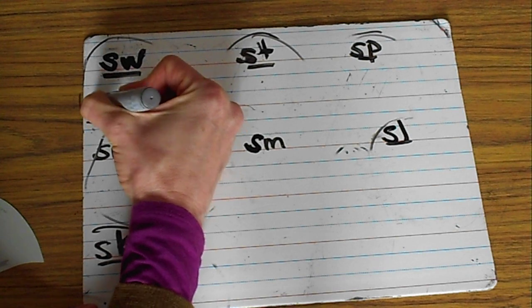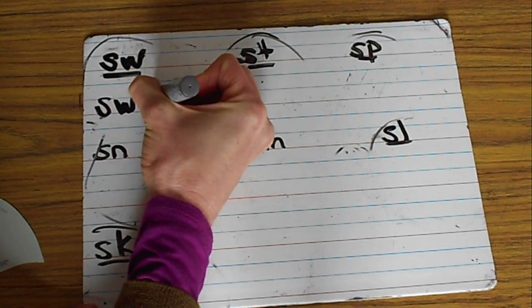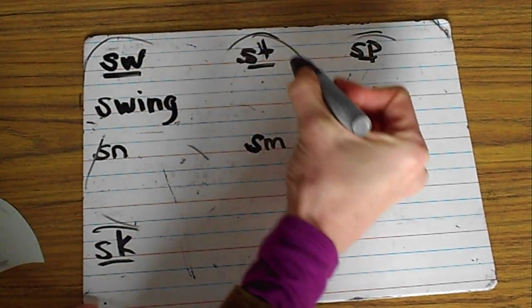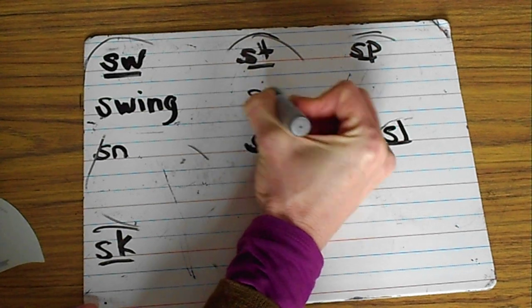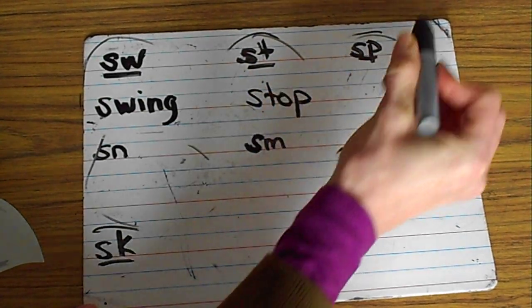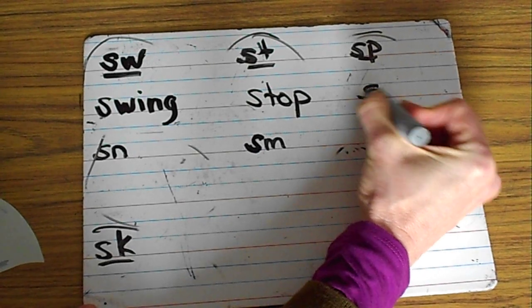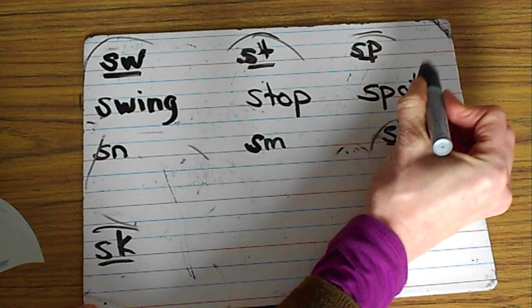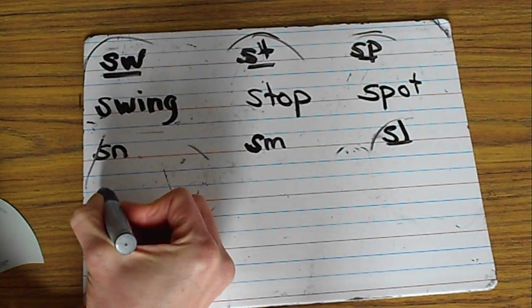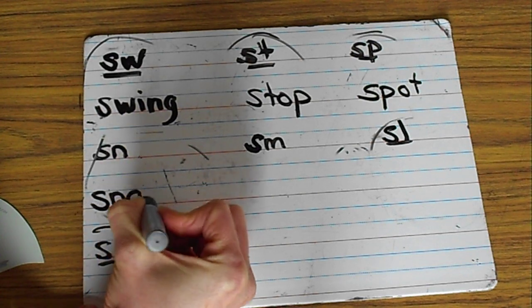Swa, what's the word? That's right, it's swing. Stuh, what's the word? That's right, that's stop. Spa, what's the word? That's right, that's spot. Snuh, what's the word? That's right, it's snail.